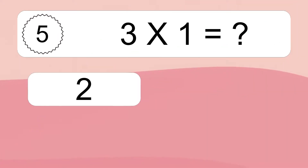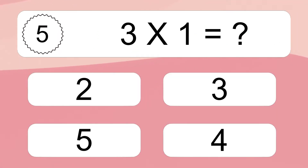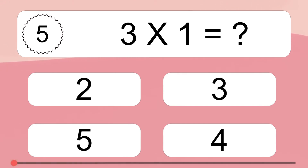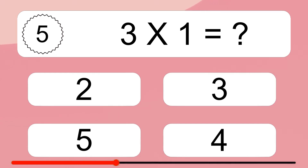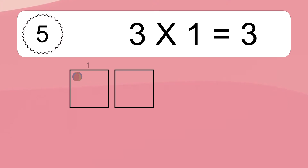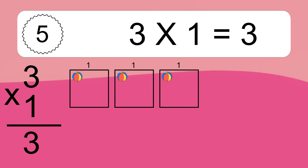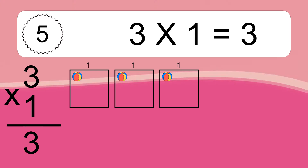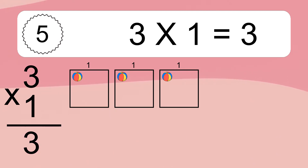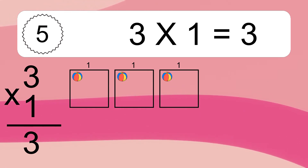3 times 1 equals what? 3 times 1 equals 3. We have 3 boxes, and each box has 1 colorful ball inside. If you count all the balls in all the boxes together, you will have 3 times 1 balls. This equals 3 balls.